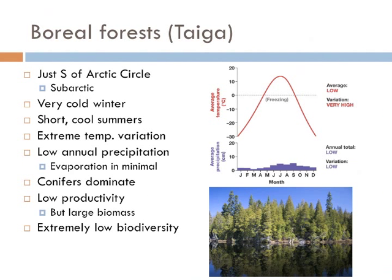Just above the temperate forest are the boreal forests, known as the Taiga. They're really defined by their temperature — a very cold, very long winter with short, cool summers. The temperature variation is extreme, and the amount of precipitation is limited. However, there's very little evaporation due to the cold temperatures, so trees can grow. These ecosystems are dominated by gymnosperms — conifers — including pines, spruces, and firs. Even though there's a high biomass, there's low productivity because these trees grow very, very slowly.